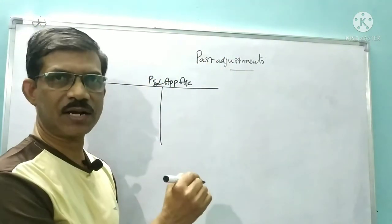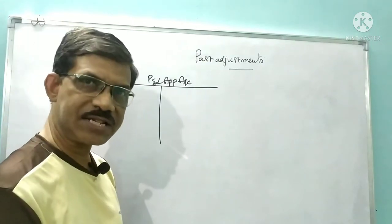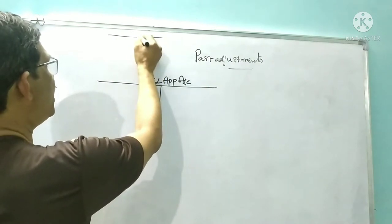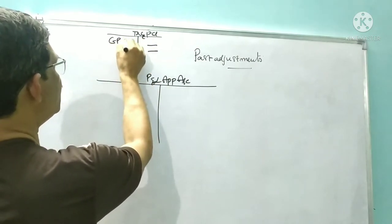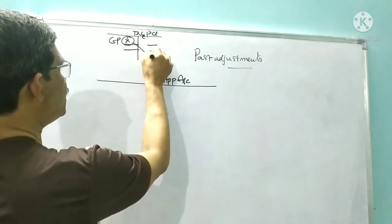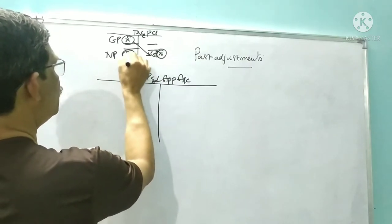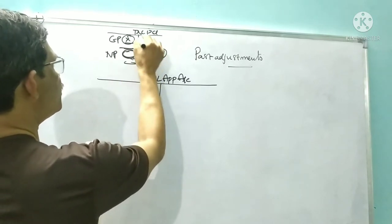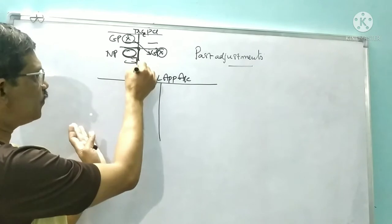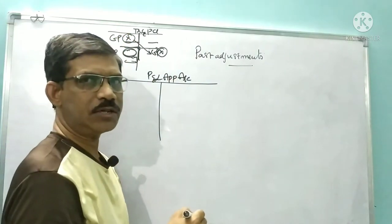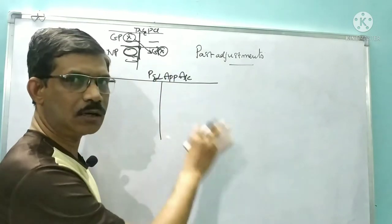P&L appropriation account is just an extension of P&L account. You know the trading and P&L account. In the trading account you get gross profit, which is taken on the credit side of the P&L account. You get net profit in P&L account. The continuation of P&L account is P&L appropriation account — it is just an extension of P&L account.